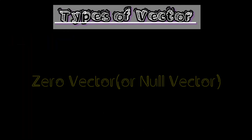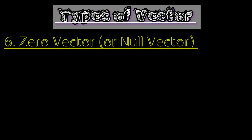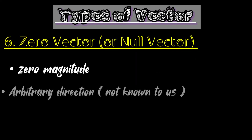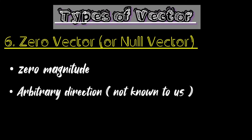Zero vector: a vector having zero magnitude and arbitrary direction, not known to us, is called a zero vector.